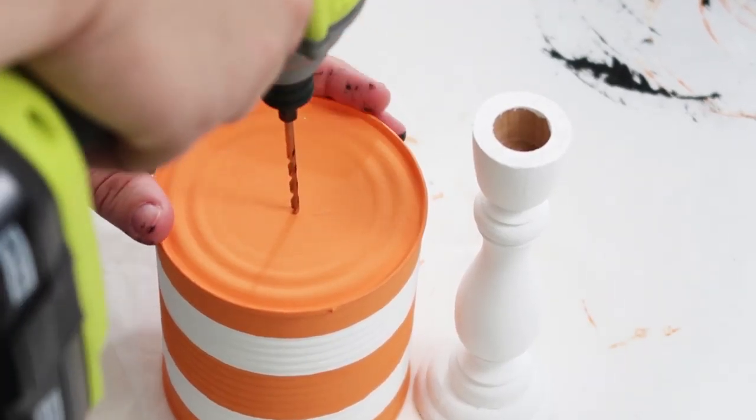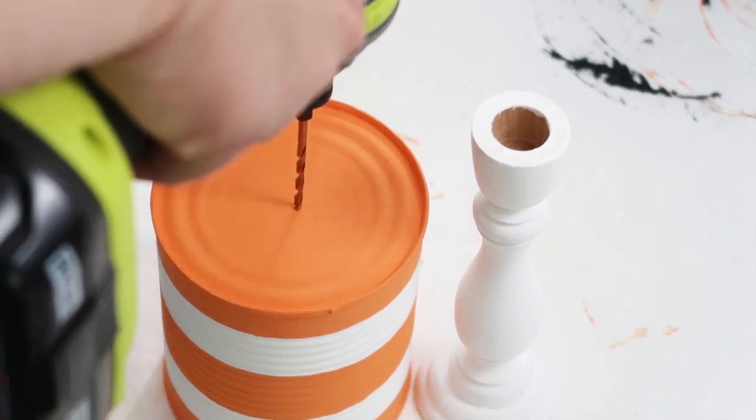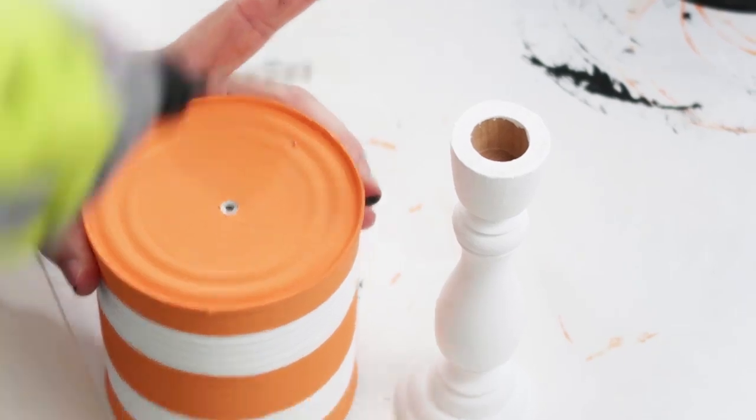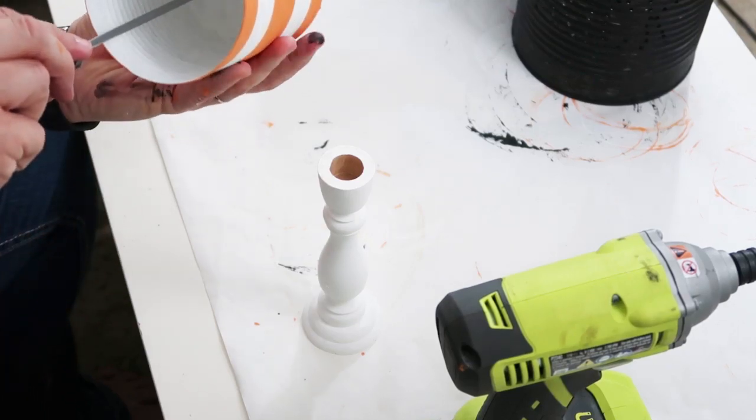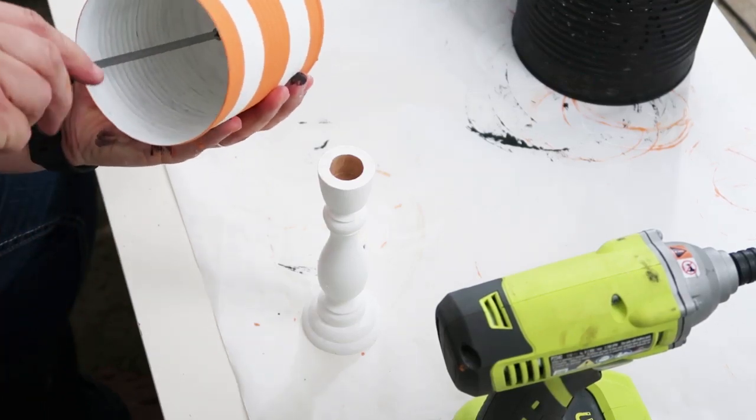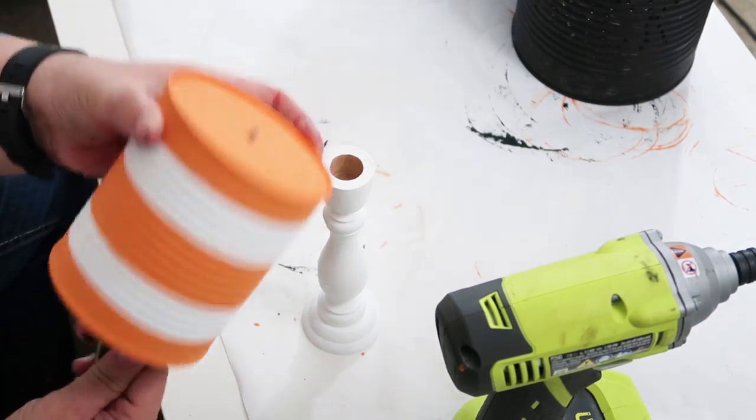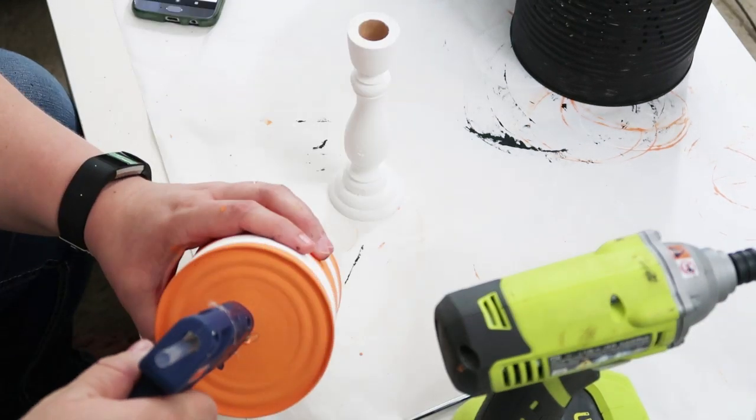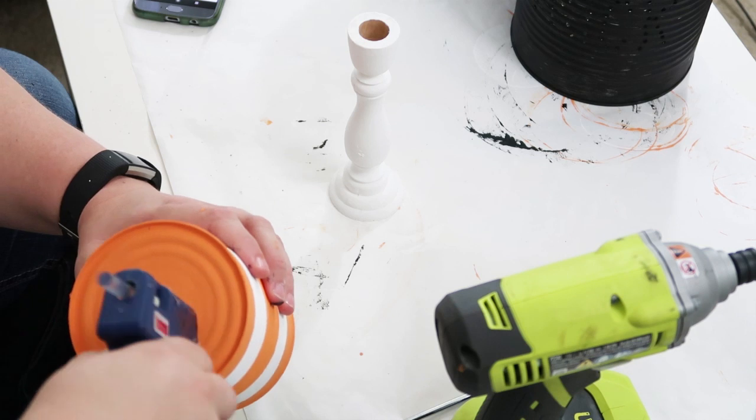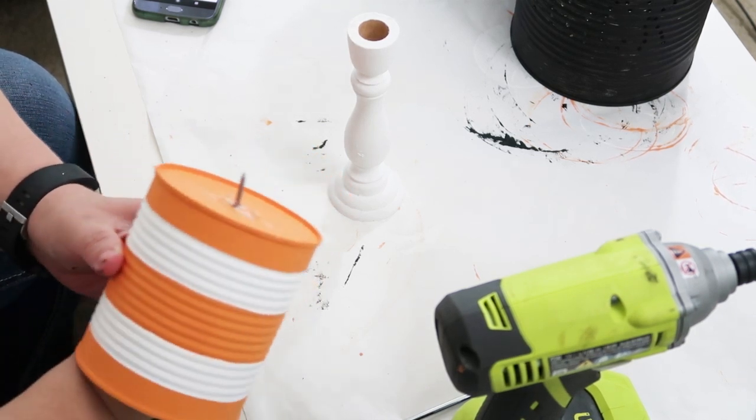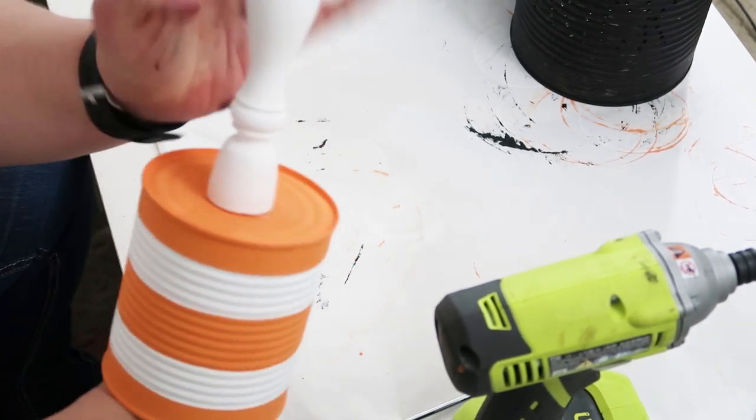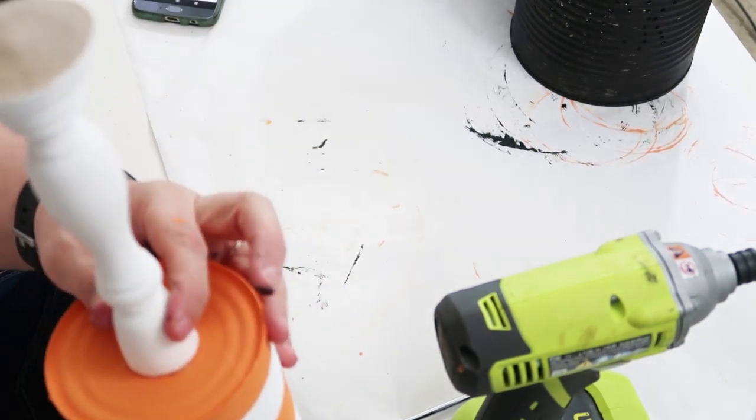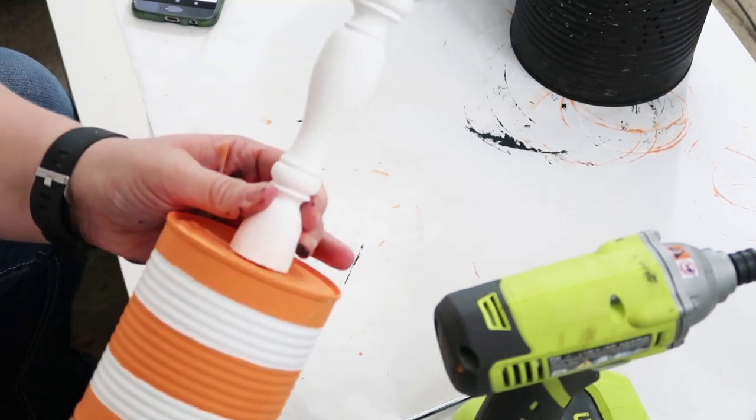Once I was all done painting everything I took my drill and to help this process be easier I drilled a hole in the bottom of the tin can and also into the candlestick holder. Then you're going to take the screw and place it in and to make sure it's nice and secure I'm going to just take some hot glue and hot glue that right on there so it's all nice and snug. Then I'm going to screw it all the way in so that it's all fastened together and nice and sturdy.